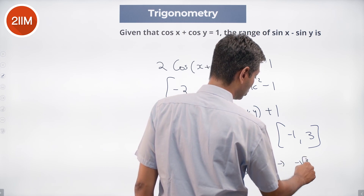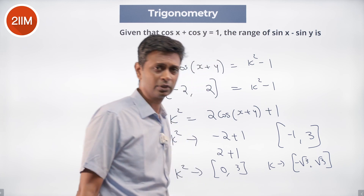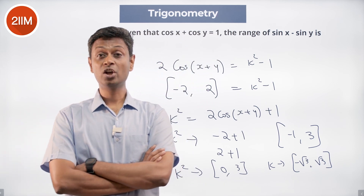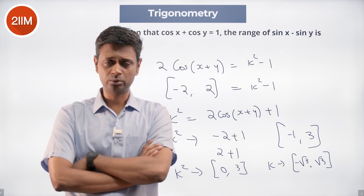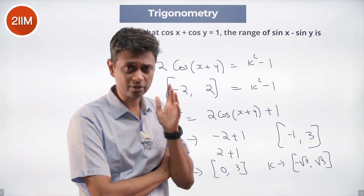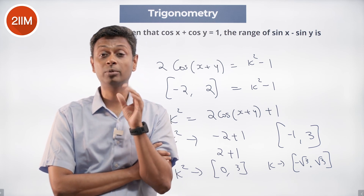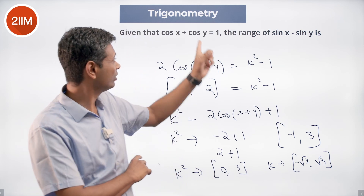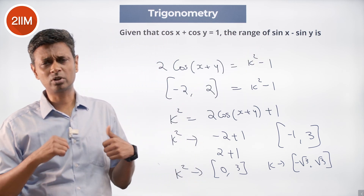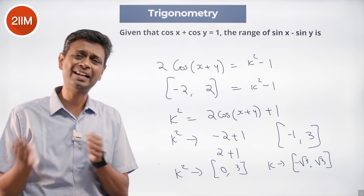k squared goes from 0 to 3. What values can k take? k can go from minus root 3 to plus root 3. k squared is less than or equal to 3, that means k should lie between minus root 3 and plus root 3. Beautiful question. A lot of these questions get simplified if you can somehow contrive a sin squared theta plus cos squared theta. So if you square this and this, then add, it's going to give a sin squared x plus cos squared x and a sin squared y plus cos squared y — this is 1, this is 1 — and then deal with the remaining.